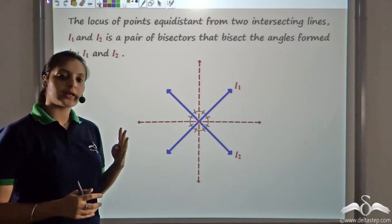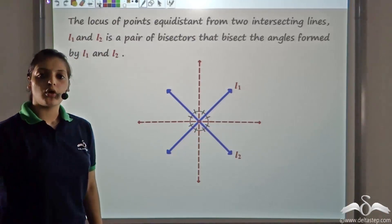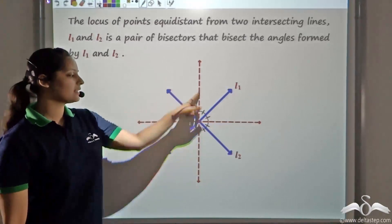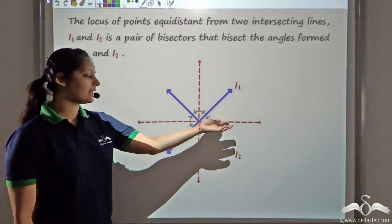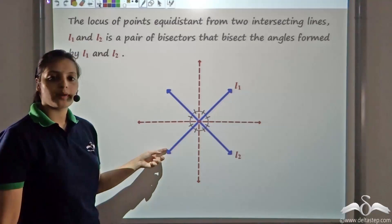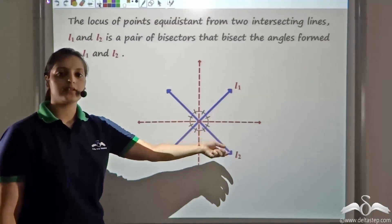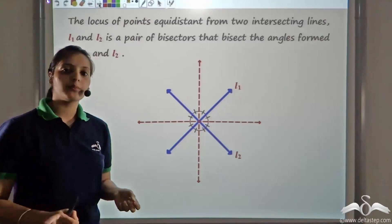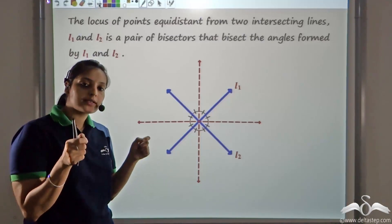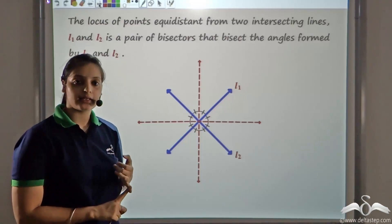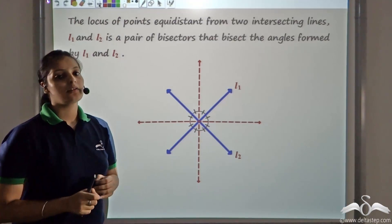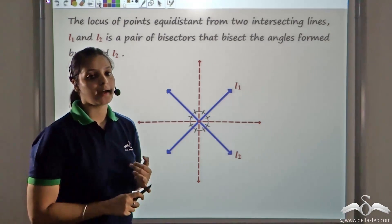The two lines form four angles — one, two, three, four — and their four angle bisectors form a pair of intersecting lines. Remember: when you have two fixed points and want a point equidistant from them, you use the perpendicular bisector. But when you have two fixed lines and want points equidistant from both lines, you use the angle bisector.